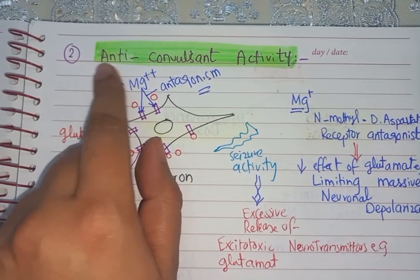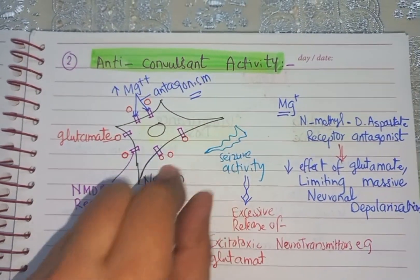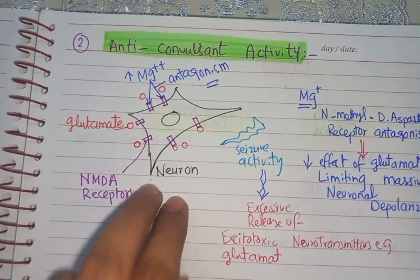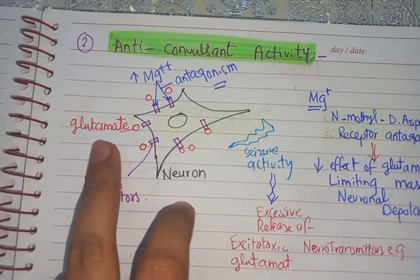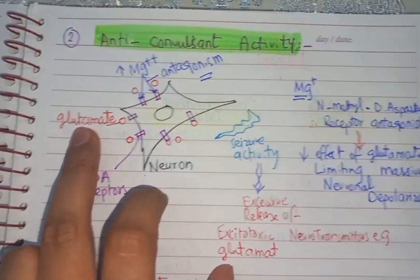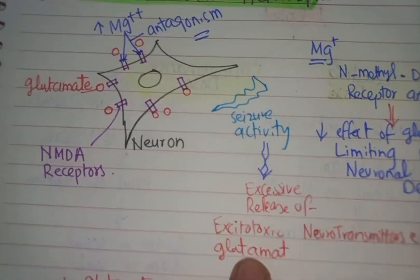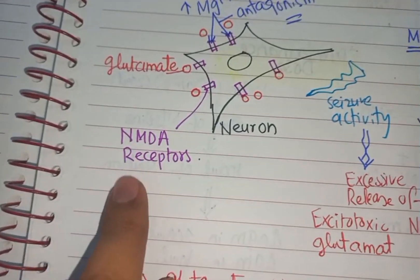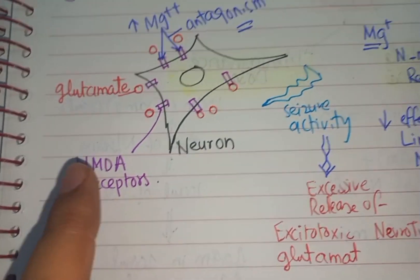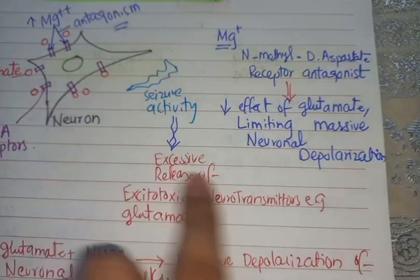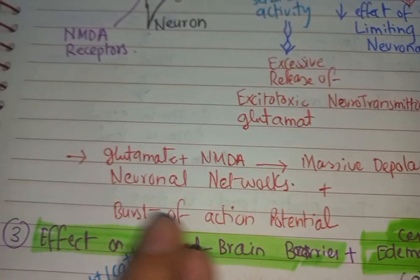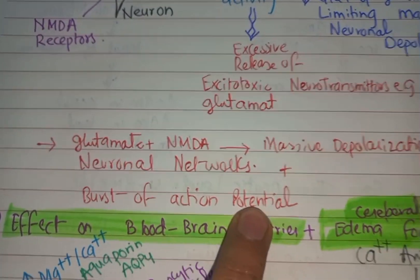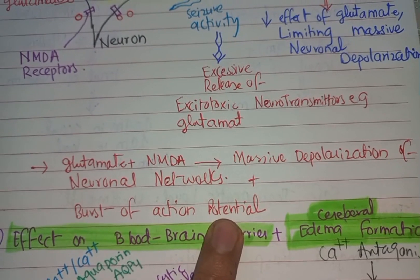The second function is anti-convulsant activity. In an eclamptic patient, there is increased release of the neurotransmitter glutamate. This glutamate binds with the NMDA receptors, causing massive depolarization of the neuronal networks, which causes a burst of action potential and hence eclamptic fits in the eclamptic patient.